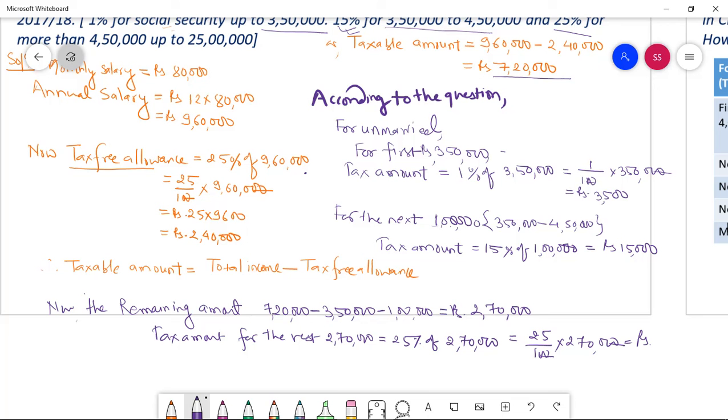Therefore the total tax equal, the first part three thousand five hundred plus second is fifteen thousand plus next one is sixty seven thousand five hundred equal to Rs